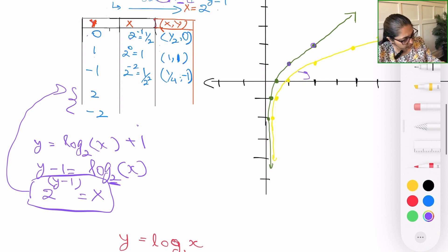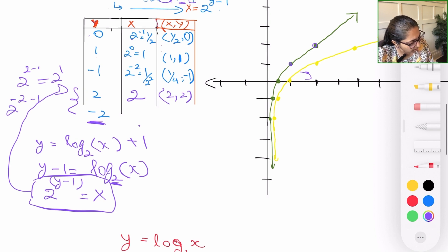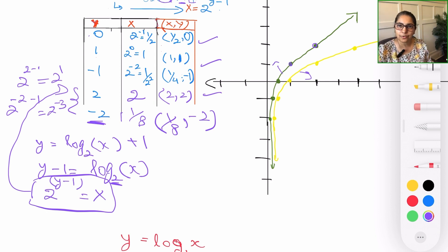So let's do these two values right here. If y is 2, this will be 2 power 2 minus 1 and x will be 2 power 1, which is going to be 2. And the coordinate now becomes 2 comma 2. When y is minus 2, this will result in 2 power minus 2 minus 1, which is 2 power minus 3, meaning we're talking about 1 over 8. The coordinate now is 1 over 8 minus 2.